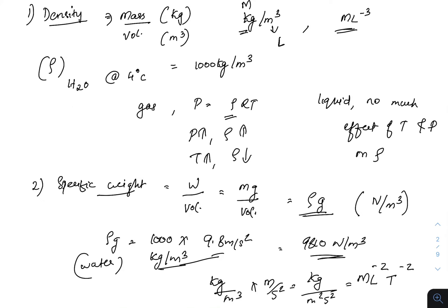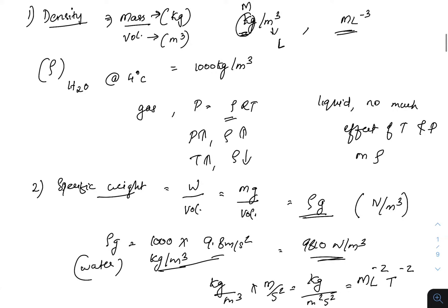The first one is density. Density means mass per unit volume. Mass is represented in kilograms and volume in meter cube, so the unit becomes kilogram per meter cube, or in dimensional form M·L⁻³. The density of water at 4 degrees Celsius is 1000 kilogram per meter cube.